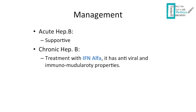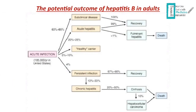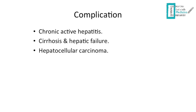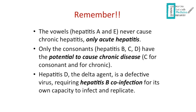For management, acute hepatitis B is usually supportive — antipyretics for fever, analgesia for pain, and so on. Chronic hepatitis B is treated with interferon alpha due to its antiviral and immunomodulatory properties. Potential complications include chronic infection, cirrhosis, hepatic failure, or hepatocellular carcinoma — remember 80% of hepatocellular carcinoma patients are hepatitis B patients. Key takeaways: hepatitis A and E cause only acute hepatitis; hepatitis E can cause fulminant hepatitis in pregnant women; hepatitis B, C, and D can cause both acute and chronic disease; and hepatitis D requires hepatitis B surface antigen to infect and replicate.